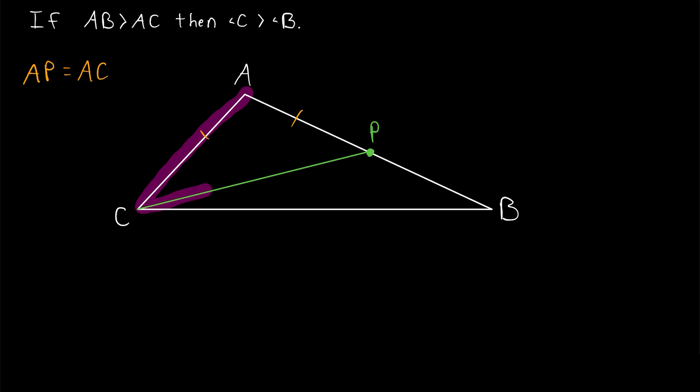Now isosceles triangles are nice because we can use the isosceles triangle theorem to conclude that this angle is congruent to this angle. What we're trying to prove now is kind of like an extension of the isosceles triangle theorem. Remember, the isosceles triangle theorem tells us that if two sides are equal, then the angles opposite them are equal as well.